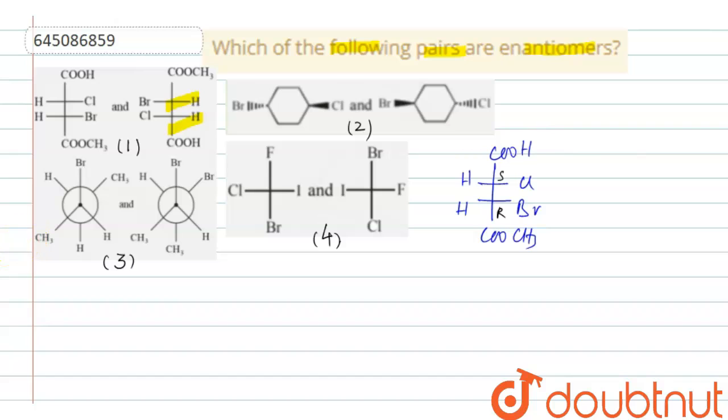Now in the second one, the configuration is, let us see. Here it is given COOCH3, COOH, H, H. This is Br, this is Cl.